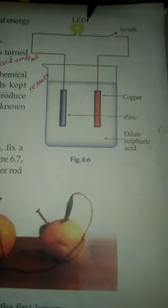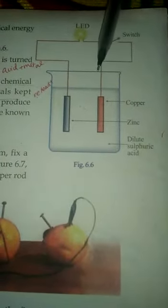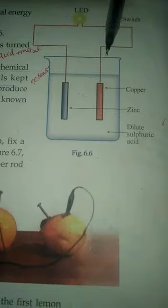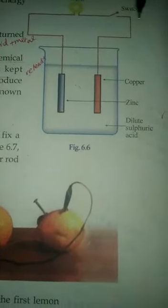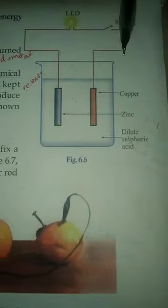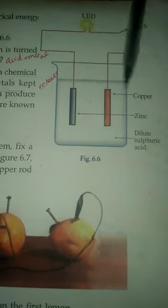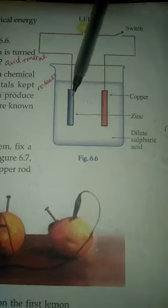That is the reason why the LED bulb glows. So this is the production of electricity here without using any battery or electricity. We are producing the electricity by using this acid and metals. Acid reacts with the metals to produce electricity.